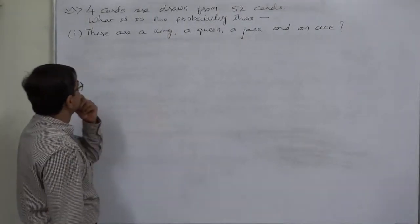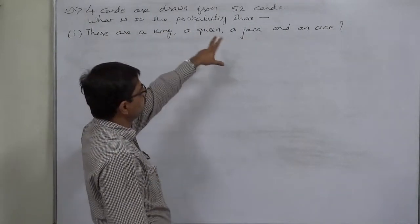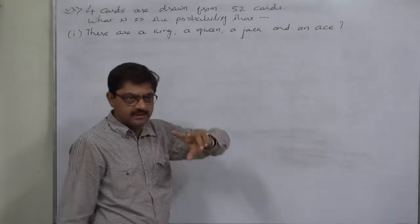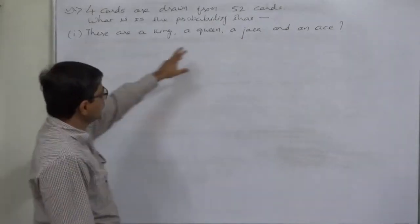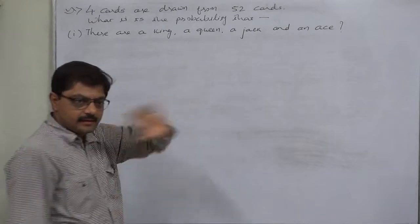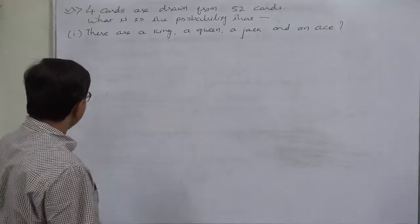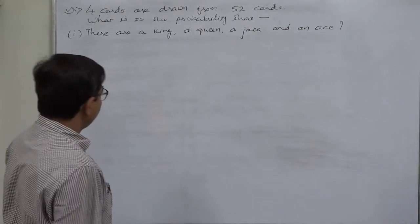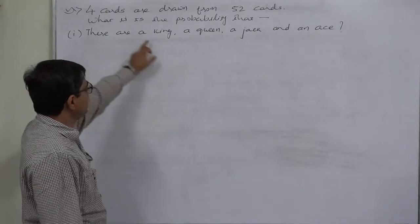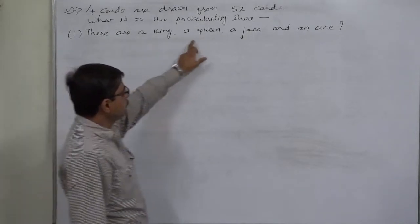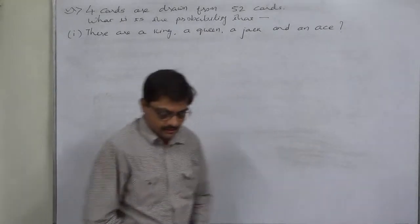Four cards are drawn from a set of 52 cards. What is the probability? Under this title, we are going to study four or five different cases. The first case is: what is the probability that there are a king, a queen, a jack, and an ace?